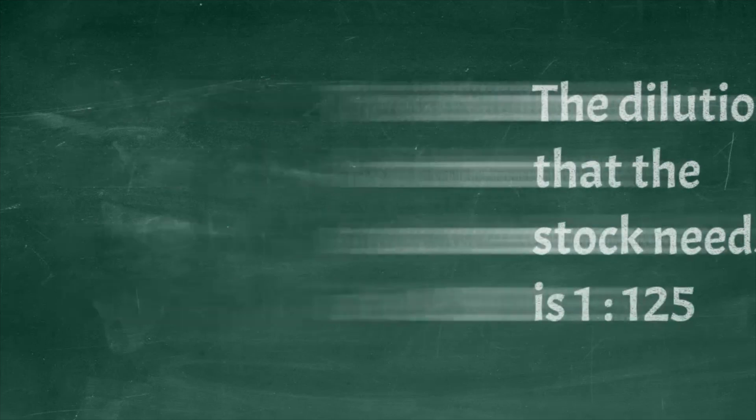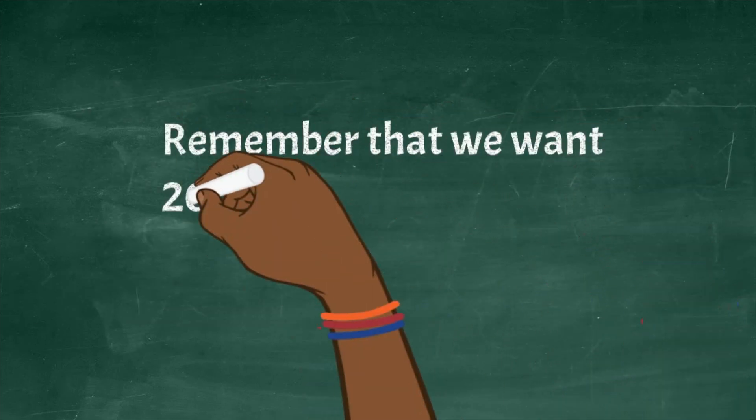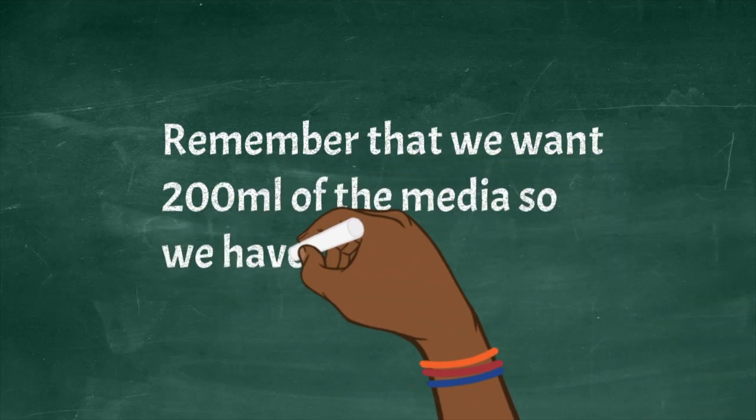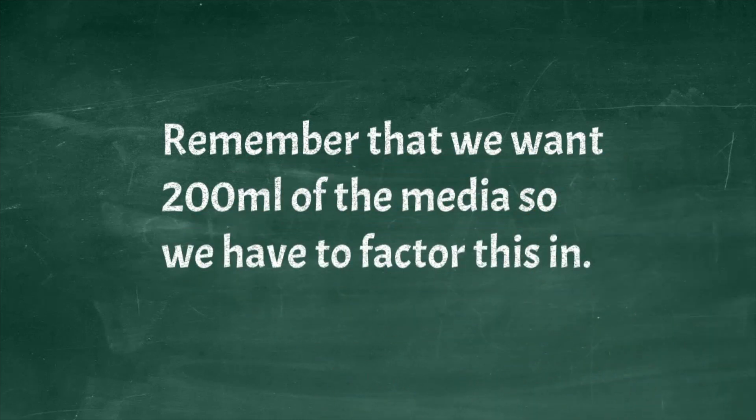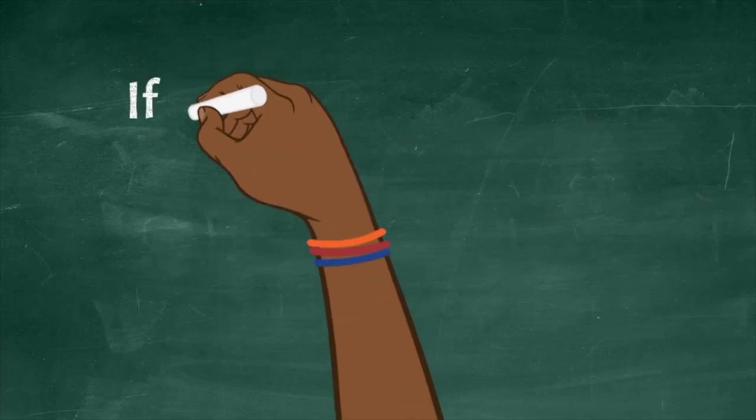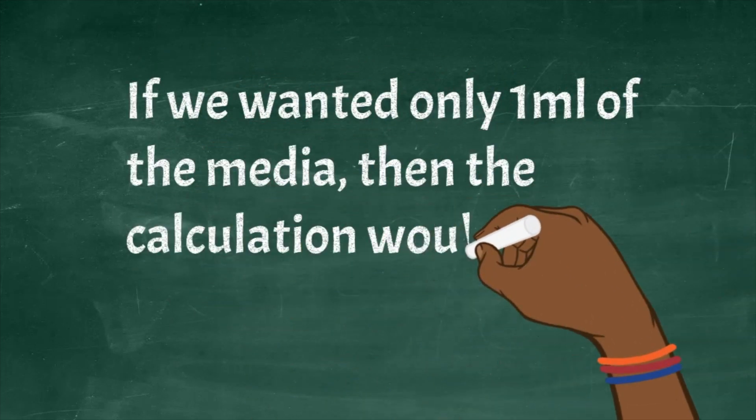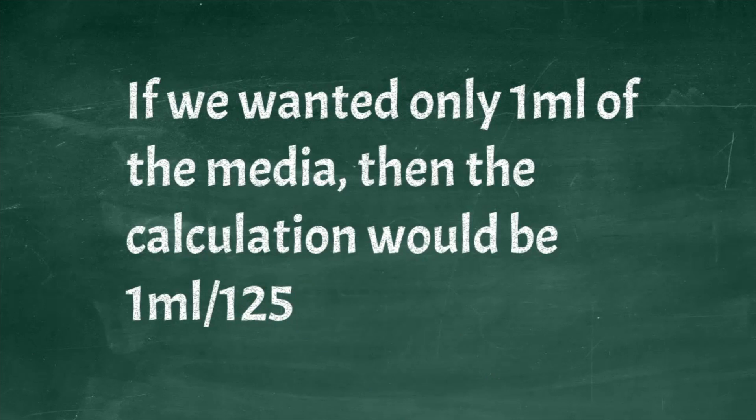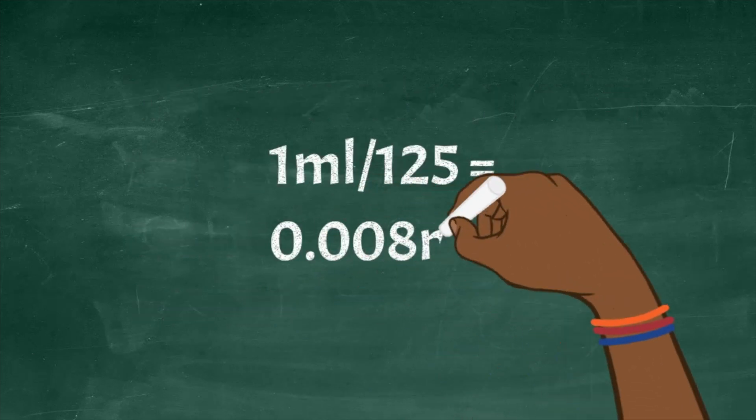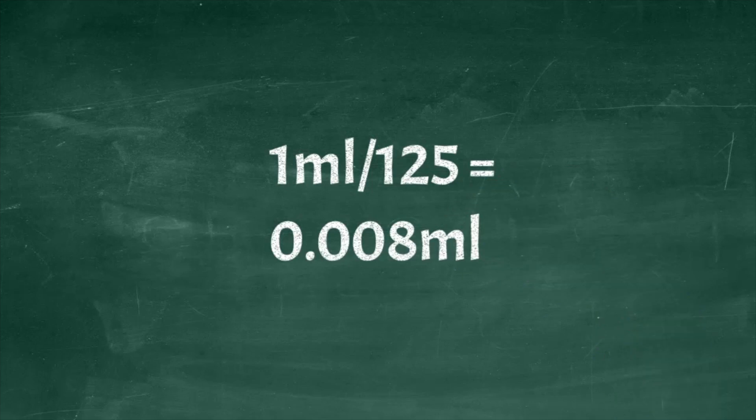Now let's keep in mind that we actually want to make 200 milliliters of media. If it was just one milliliter that we wanted, we would do 1 ml divided by the 125 dilution ratio that we've just calculated, and that will give us 0.008 ml.